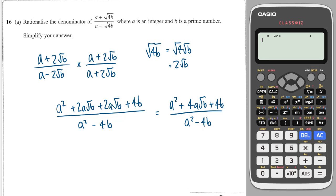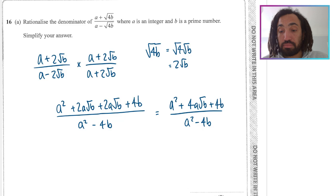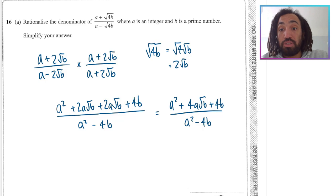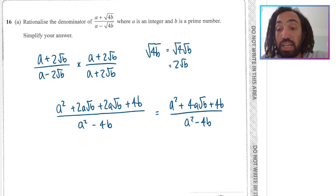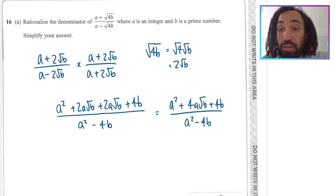That is rationalised because there is no surd on the bottom, and we are done. That's surds done. If you found that useful, please do like the video — that would be greatly appreciated. Move on to the next topic. I will see you there. Bye for now.